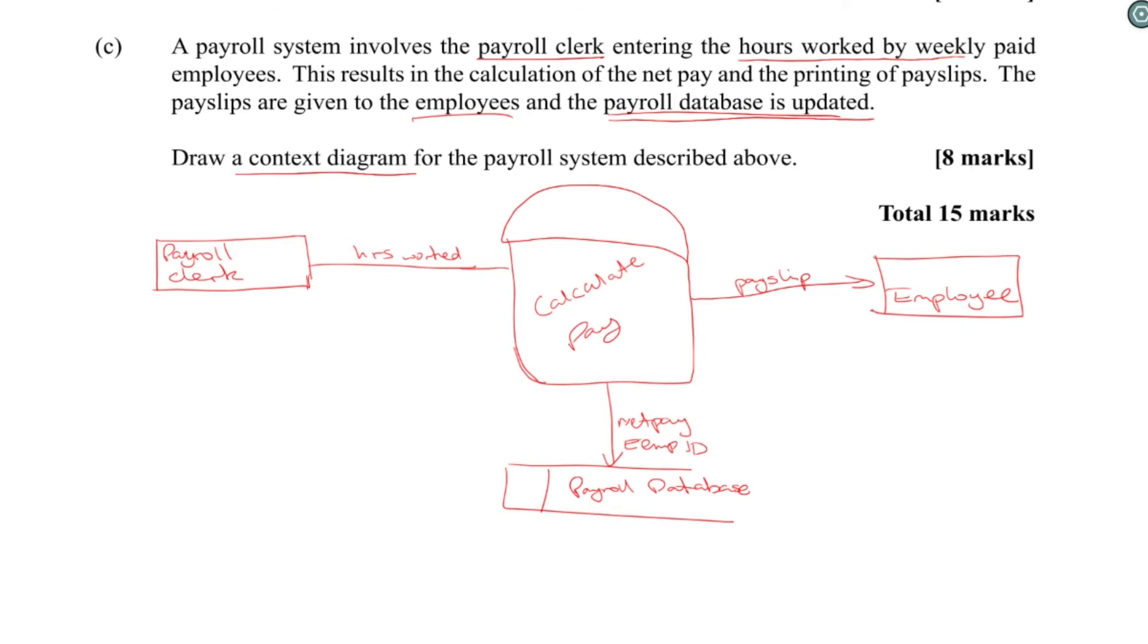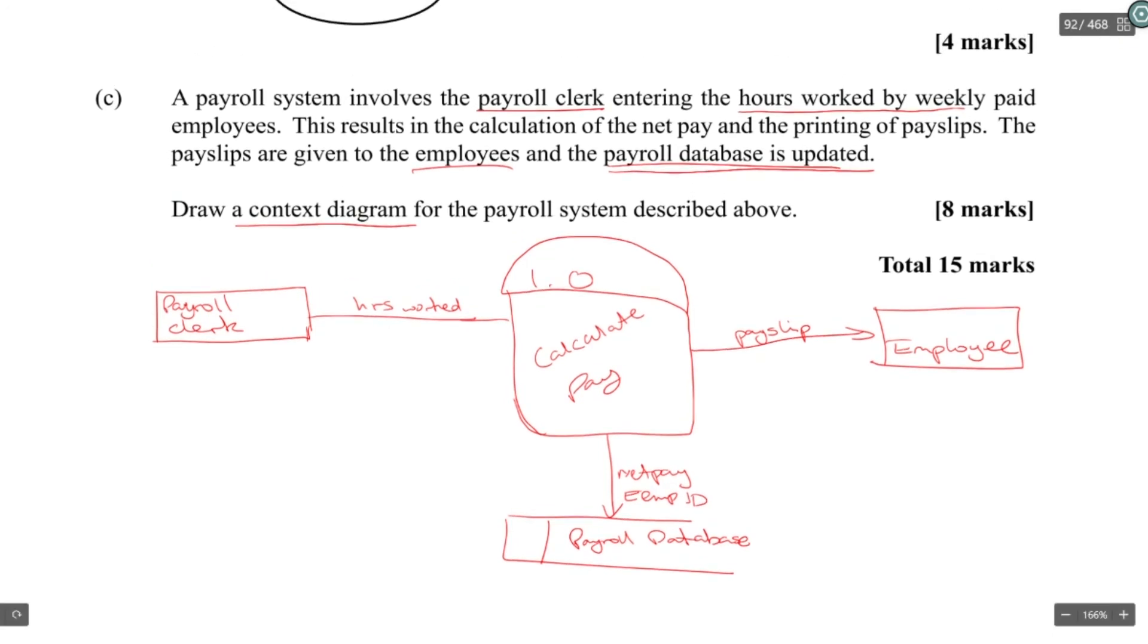Based on the marks, it looks like you don't need to get the information from the database—maybe, maybe not. But as a standard context level diagram there, or putting the employee ID going into the data store. You gotta get the hours worked by the employee. If you don't have the employee ID, you wouldn't know whose pay slip to create. So then you should pull the employee info from the database so that the pay slip will come up. But the pay slip needs to get information, and the hours worked and employee ID is not enough for the pay slip.